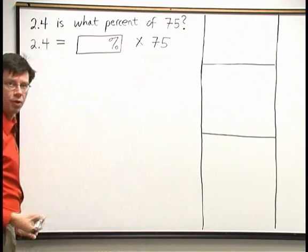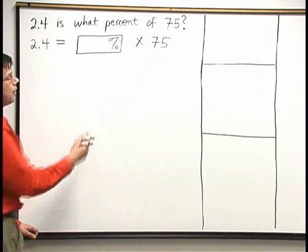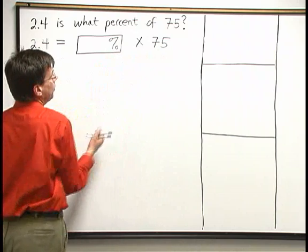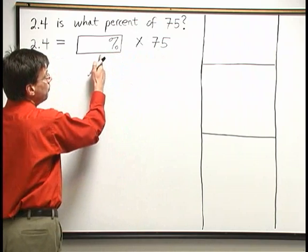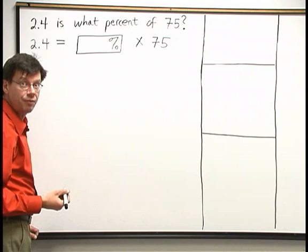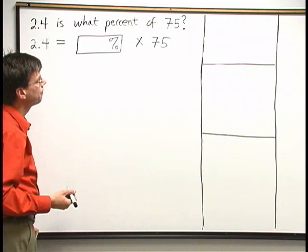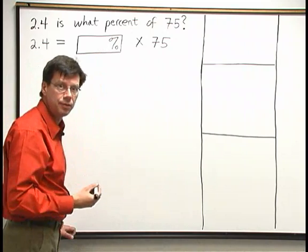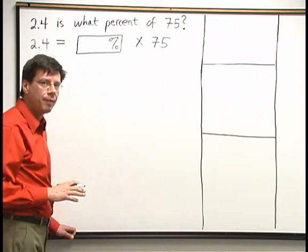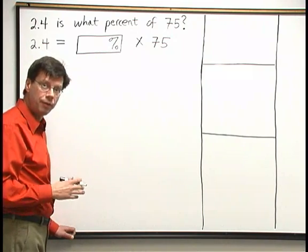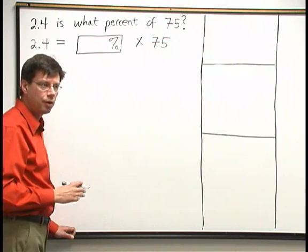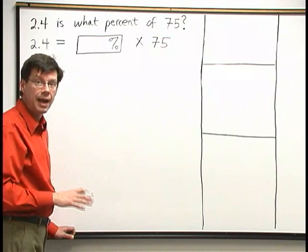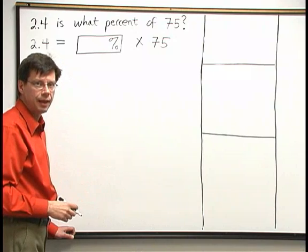We have a multiplication statement where we're missing one of the multipliers. Because we're missing a multiplier, we're going to have to divide to get the answer. Also, notice that we want a percent answer. But we're not going to worry about the percent right now. Whenever we want a percent answer, we convert to percent form at the very end of the problem. We'll do that later.